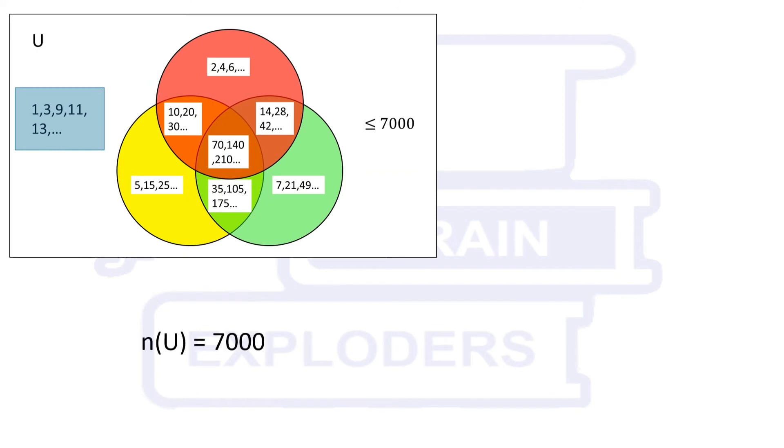The number of elements in the required sets can be calculated by simple logic. Set U has 7000 elements. Set A contains multiples of 2, hence the number of elements in it is 7000/2.